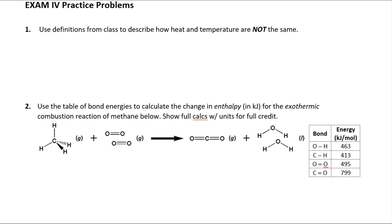This first one is clearly thermodynamics and it's essentially a definitions question. We talked in class about how some people confuse heat and temperature — in everyday language they might be used interchangeably, but in the precise language of thermodynamics they are most certainly not. What is heat? The most important thing to know is that heat is a type of energy transfer — a transfer of energy from an area of high temperature to an area of low temperature.